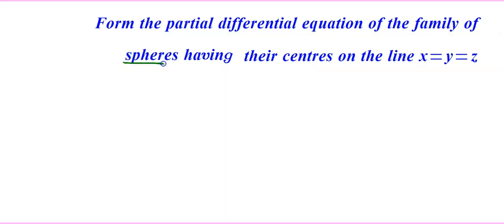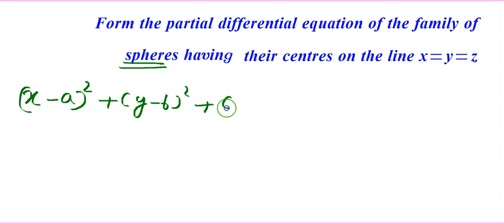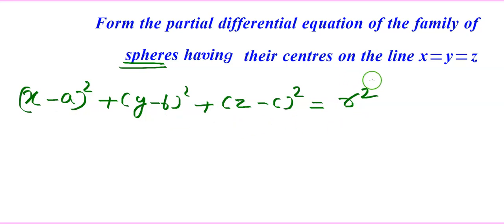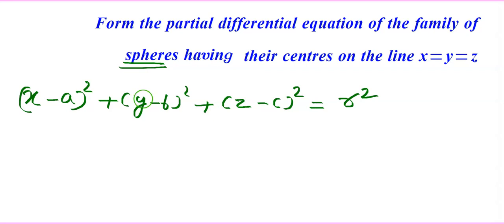We know that the general equation of a sphere is (x−a)² + (y−b)² + (z−c)² = r², which is the sphere with center (a, b, c) and radius r. Here, the center of the sphere lies on the line x = y = z. Therefore, the center (a, b, c) satisfies a = b = c.